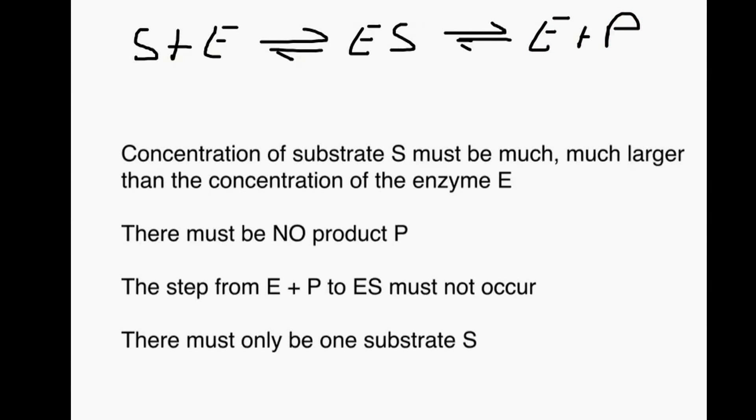This Michaelis-Menten equation only works if the concentration of the substrate is much, much larger than the concentration of the enzyme. So this S must be much larger than E.